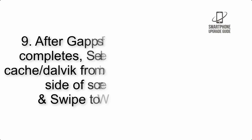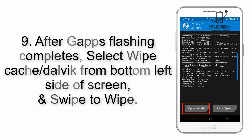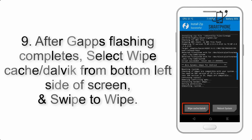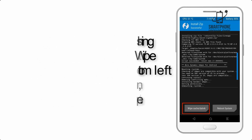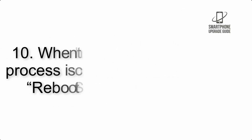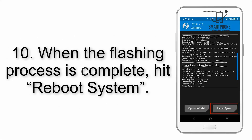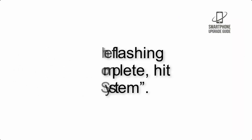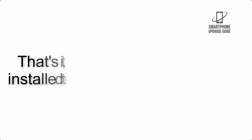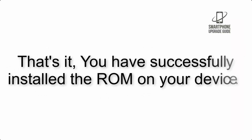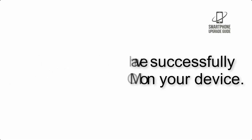Step 9: After GApps flashing completes, select Wipe Cache and Dalvik from the bottom left side of the screen and swipe to wipe. Step 10: When the flashing process is complete, hit Reboot System. That's it — you have successfully installed the ROM on your device.